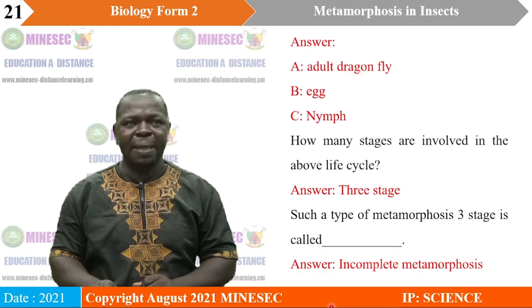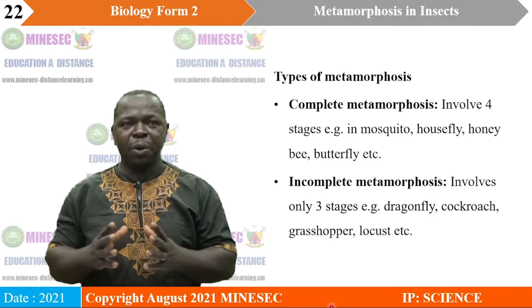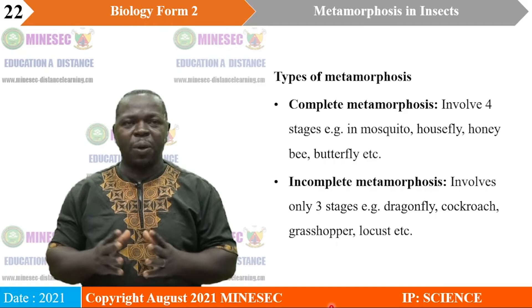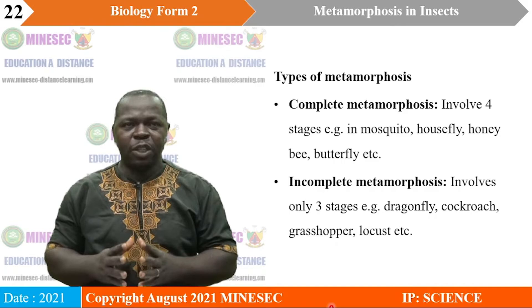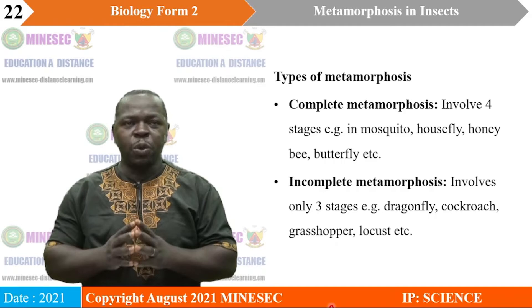There are two main types of metamorphosis. We have complete metamorphosis, which involves four stages. Examples include mosquito, housefly, honeybee, and butterfly — these organisms undergo complete metamorphosis. The adult lays eggs; the egg develops into a larva form; the larva form develops into a pupa form; and the pupa form grows and develops into an adult. Take note: the pupa and larva do not resemble the adult, and they feed on different foods from the adult.